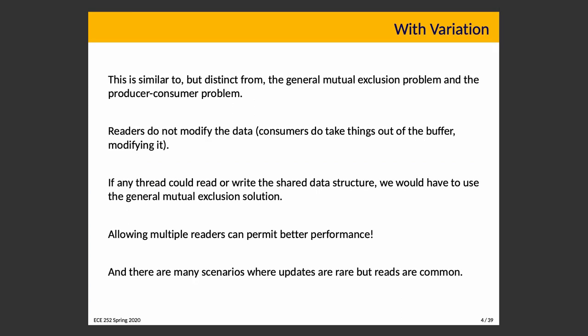You might think this is very similar to general mutual exclusion problems discussed before. But there's a key distinction: we have two kinds of thread in this scenario. Readers don't modify any data. Consumers in the producer-consumer problem count as modifying data because they take data out of the buffer — that counts. So if a thread could read or write a shared data structure, it is a writer. If you have only writers, you end up with regular mutual exclusion solutions, and you don't need the readers-writers problem because it doesn't give you anything extra.